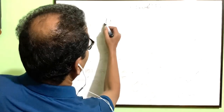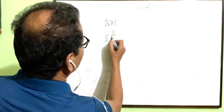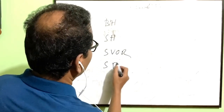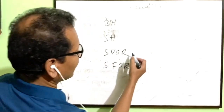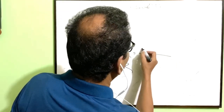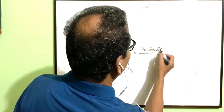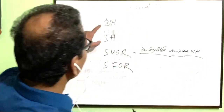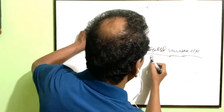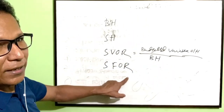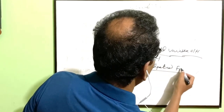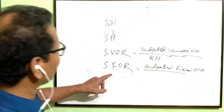To calculate overhead variances, we have to know budgeted hour, standard hour, standard variable overhead rate, and standard fixed overhead rate. Standard variable overhead rate is calculated as budgeted variable overhead divided by budgeted hour. Standard fixed overhead rate is calculated as budgeted fixed overhead divided by budgeted hour.